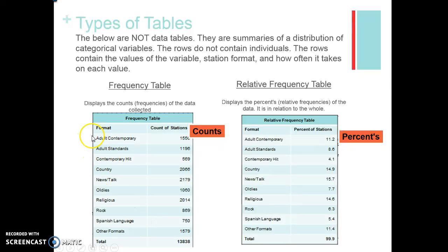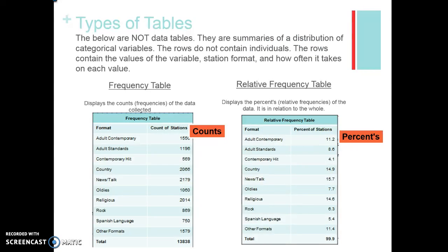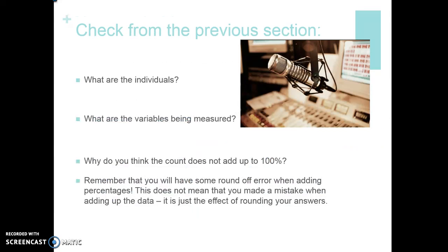Each row contains the value of the variable — basically the label on your bin — and how often it takes on each value. From this previous section, answer a few questions: What are the individuals? What variables are being measured? And why does the percent not add up to 100? Go ahead and press pause, answer these, and then look at the answers on the next slide.